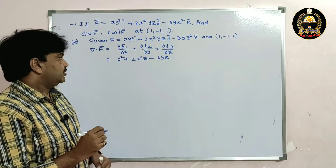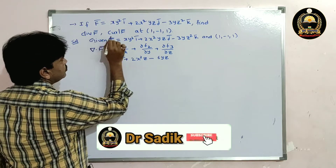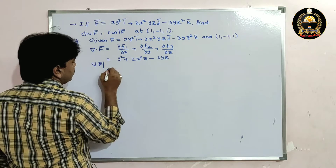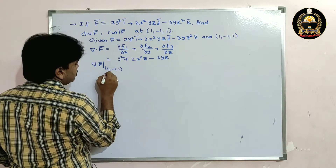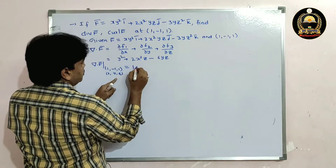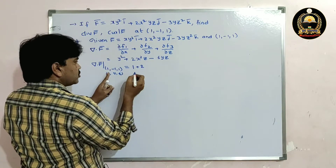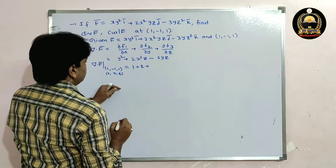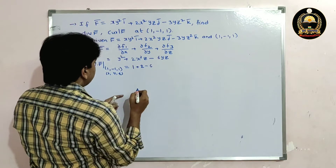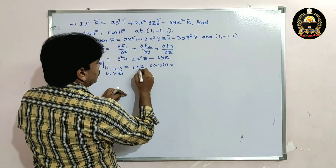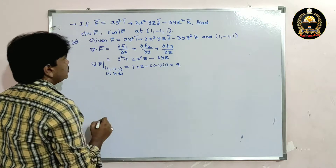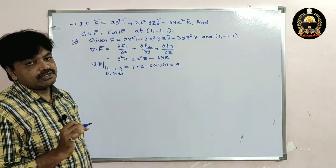Now substituting the point (1, -1, 1): del dot f̄ at (1, -1, 1). Here x=1, y=-1, z=1. So y² = (-1)² = 1, plus 2×(1)²×(1) = 2, minus 6×(-1)×(1) = -6. So we get 1 + 2 + 6 = 9.